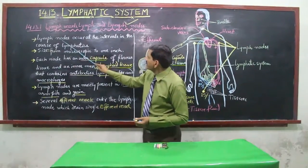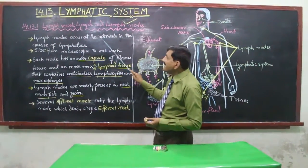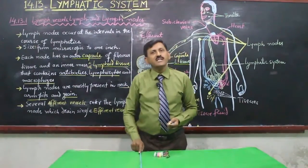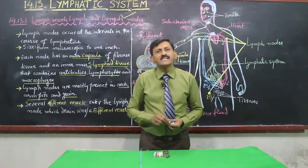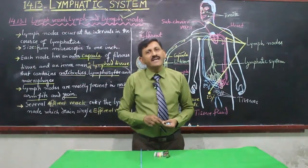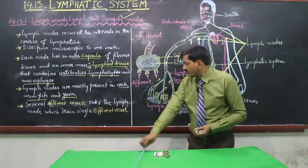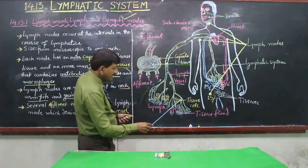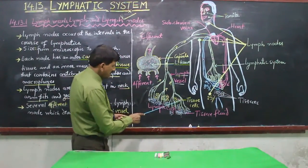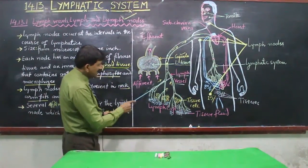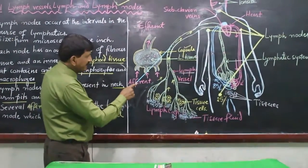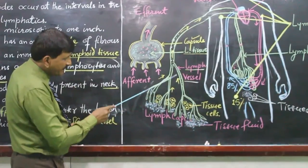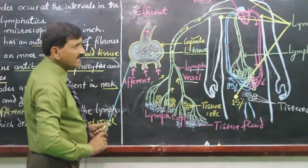Lymph nodes occur at intervals in the course of lymphatics — that is, in the pathway of lymph vessels, lymph capillaries, lymph vessels, and collecting ducts. At these intervals, lymph nodes are found.